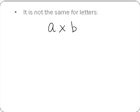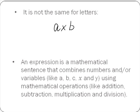However, this is not the same for letters. What we are going to look at is what we get when we multiply a by b. The first thing we need to know is that a multiplied by b is an expression. An expression is a mathematical sentence that combines numbers and/or variables using mathematical operations. In this case, a multiplied by b is an expression because it combines the variables a and b using the mathematical operation multiplication.